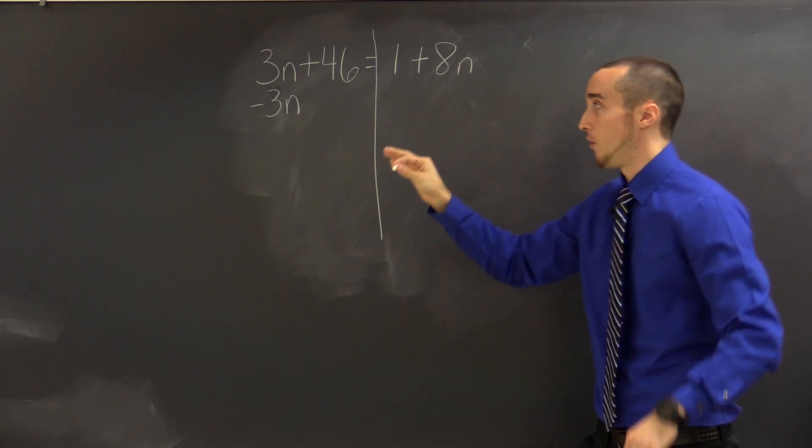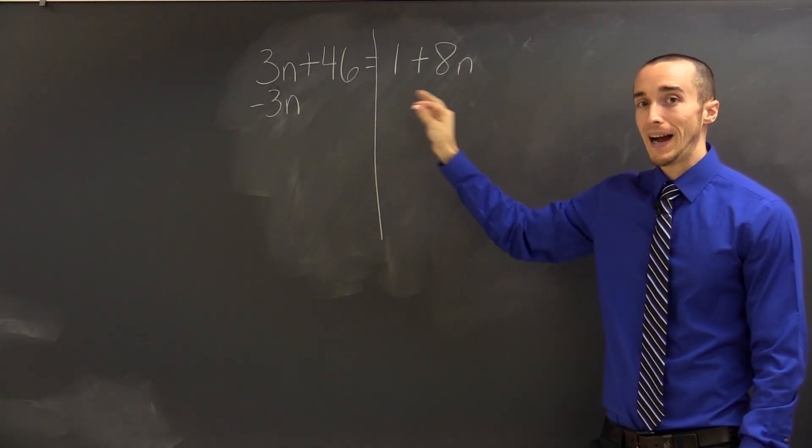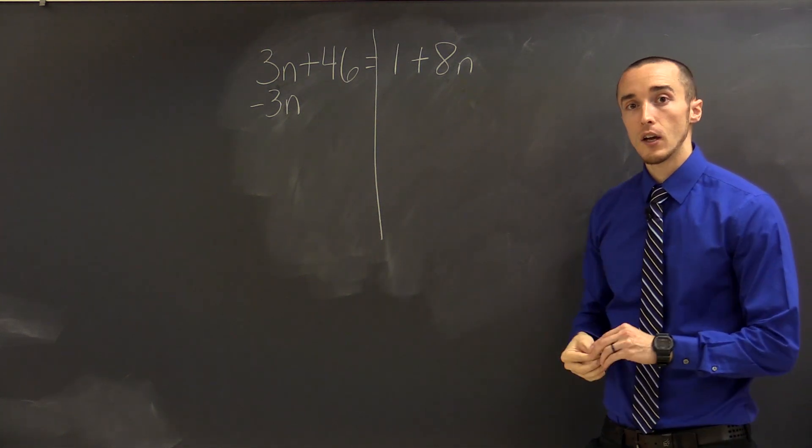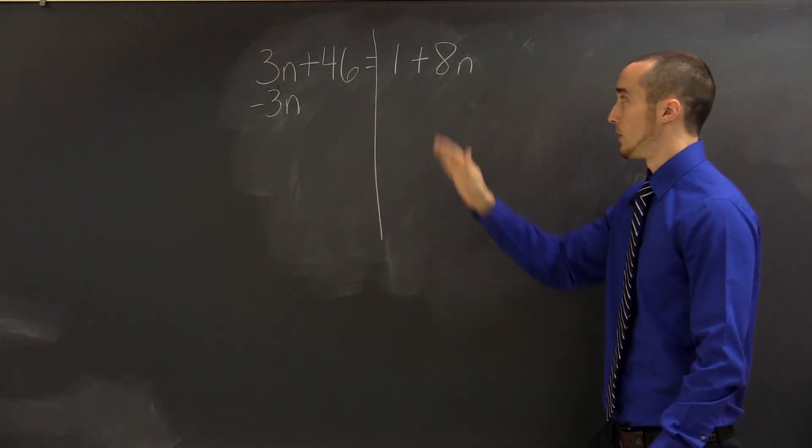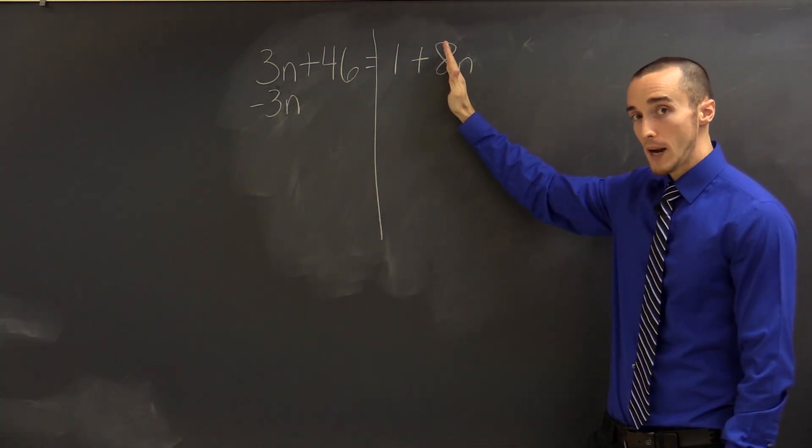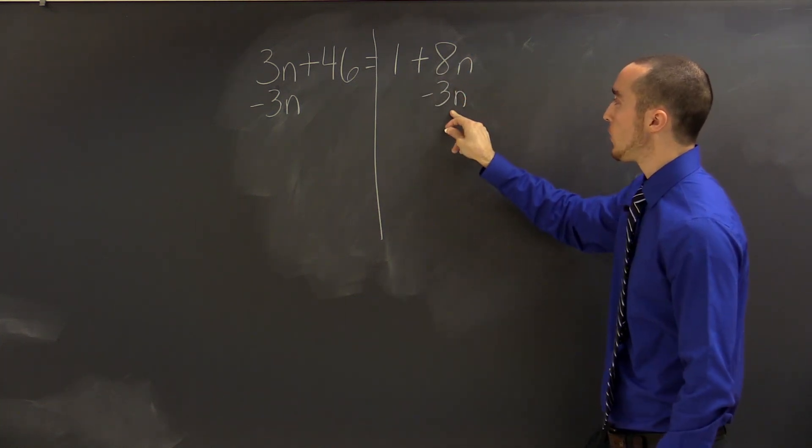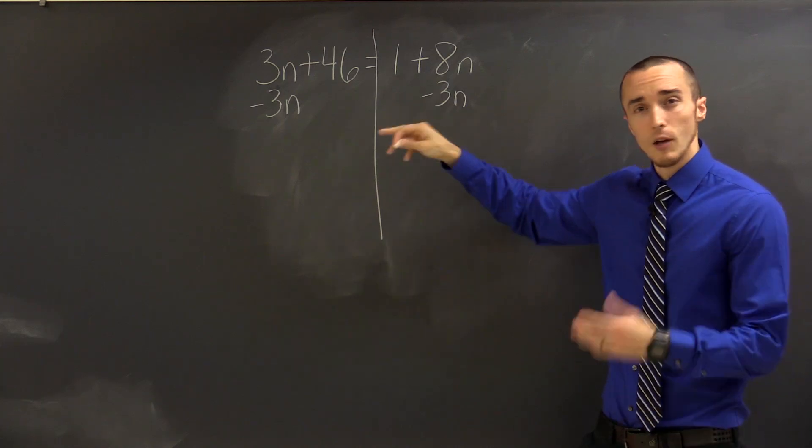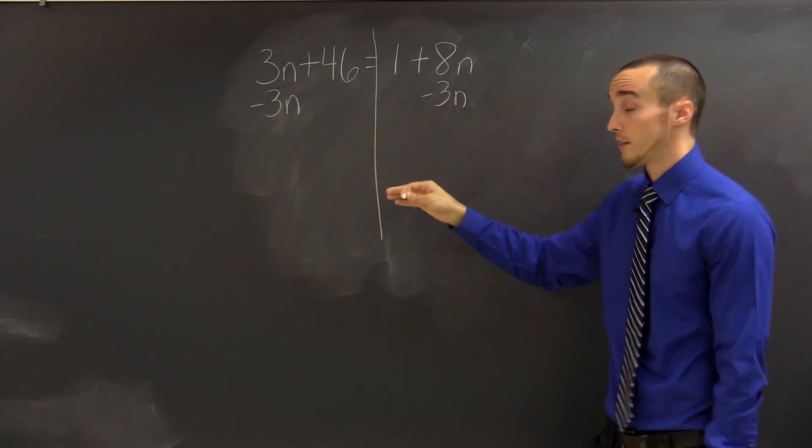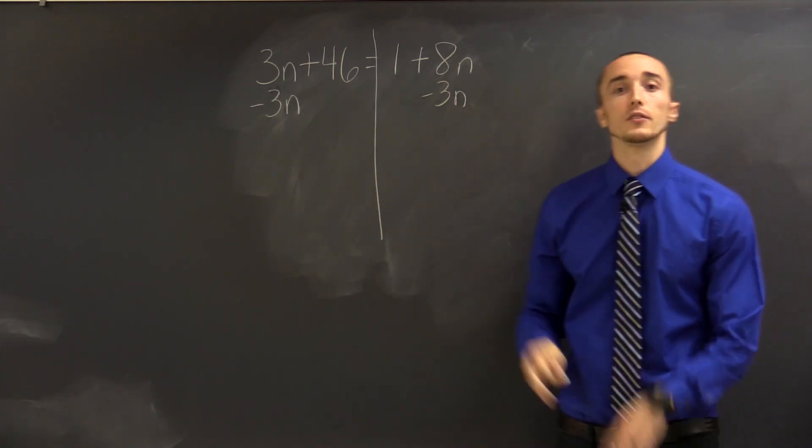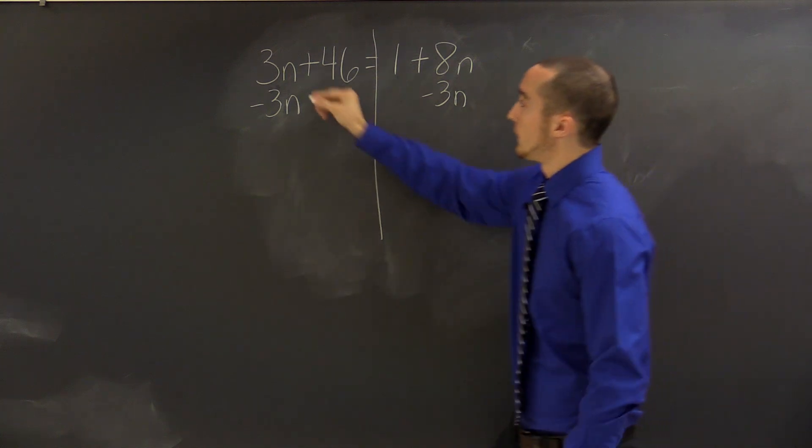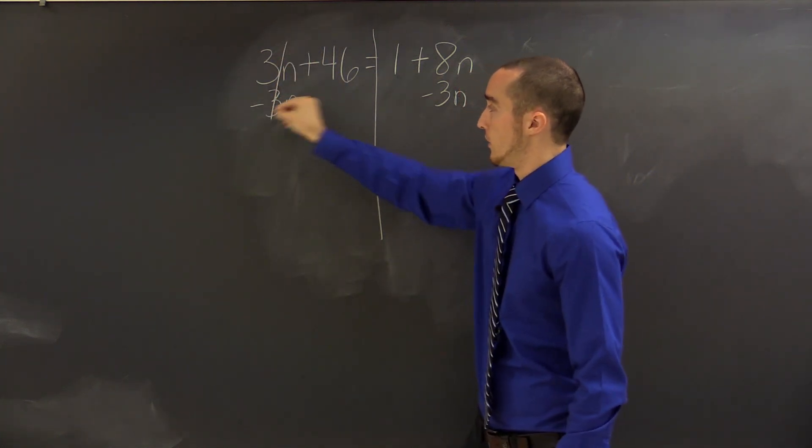I want to point something out, though. When you go to write down a minus 3n on the right-hand side, for organizational purposes, if you would stack it right below the 8n, since those are like terms, this will really help you out later on. I wouldn't want to put it underneath the 1 because those aren't like terms. I can't subtract them. But I can subtract these. Okay, so let's see what we have. Working left to right, these terms cancel.